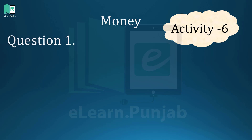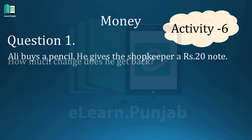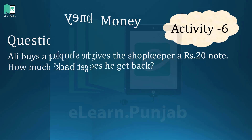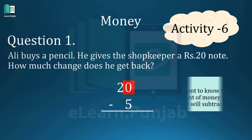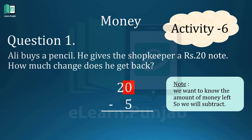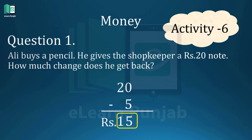Question No. 1. Ali buys a pencil. He gives the shopkeeper a Rupees 20 note. How much change does he get back? Solution: Rupees 20 minus Rupees 5. We want to know the amount of money left, so we will subtract. The above value is 0 and below value is 5, so we cannot subtract 0 from 5. For this we take a carry from the left. 10 minus 5 equals 5, with 1 remaining on the left side. So the answer is Rupees 15.